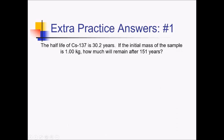On this one, we have the half-life of cesium-137, which is 30.2 years. Initial mass is 1 kilogram. How much is left after 151 years? We're going to need the half-life formula for this one — and really for all of the problems in this extra practice. So we've got AB to the T over K.